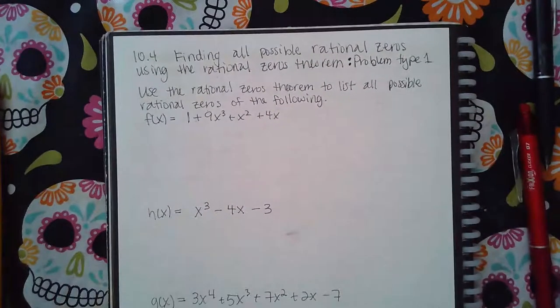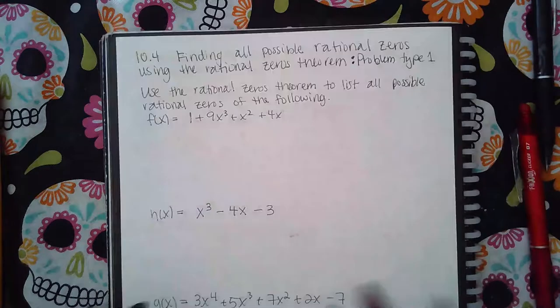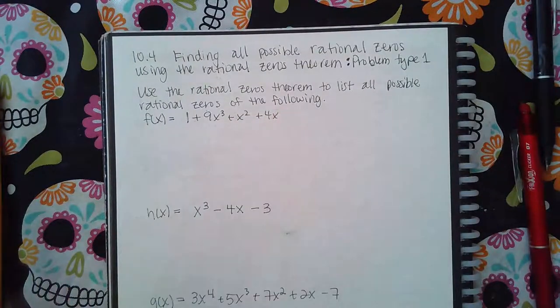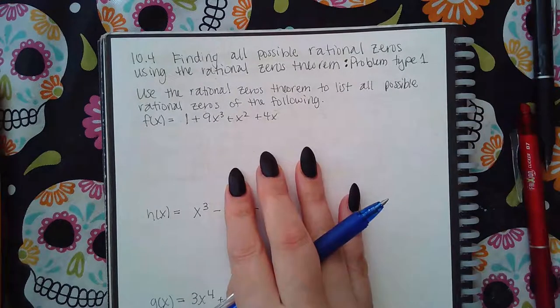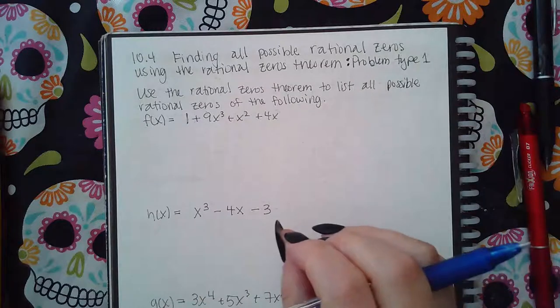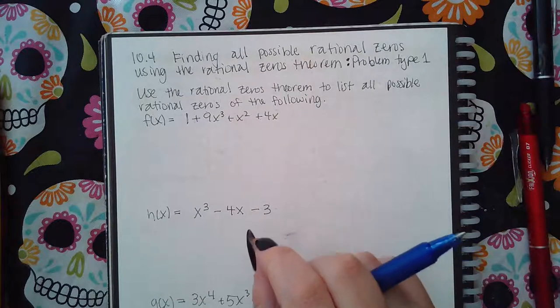Okay, so in this particular problem, we have to use what's called the rational zeros theorem. And what that tells us is that even if we have no idea what any of the zeros are, based